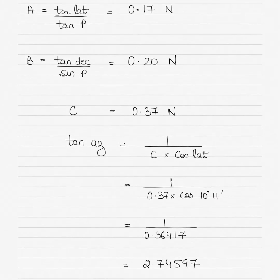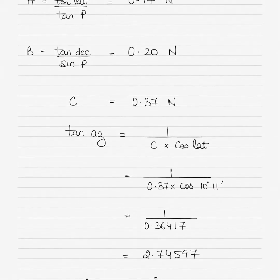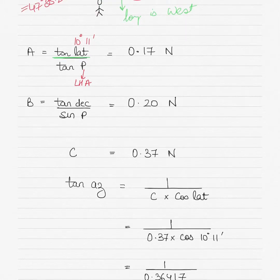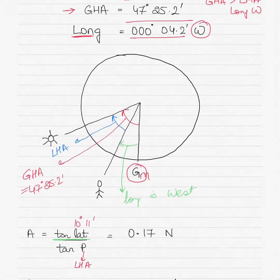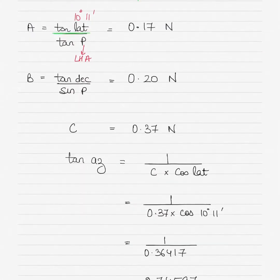To calculate your position line, you divide tan of latitude by tan of P, which is P equals LHA. Latitude is given in the question as 10 degrees 11 minutes. The P or LHA you calculated as 47 degrees 21 minutes.